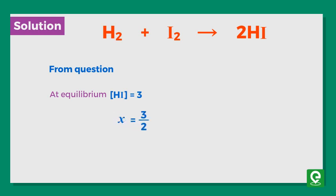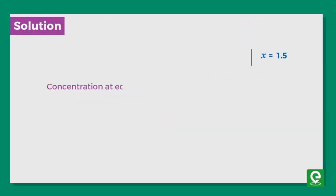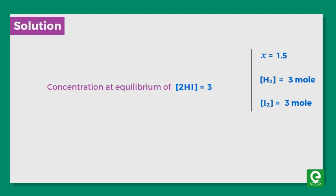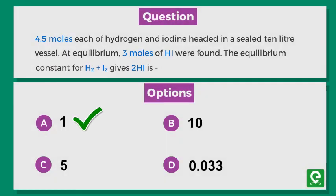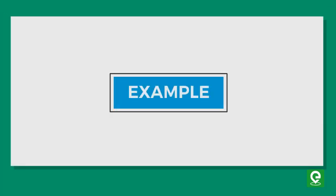So value of x comes out to be 1.5. Concentration at equilibrium of H2 equals 4.5 minus 1.5, which is 3 moles. Concentration at equilibrium of I2 also equals 3 moles. Using the formula, K equals square of concentration of HI divided by concentration of I2 into concentration of H2. On substituting the values, K comes out to 1.